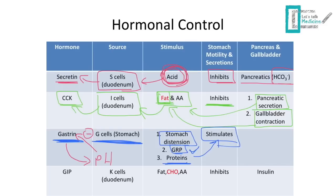Our last hormone here is GIP, found in the K cells of the duodenum. It's stimulated by fat, carbohydrates, and amino acids — basically food in general, but mostly carbohydrates. GIP inhibits stomach motility and secretions, and tells the pancreas to secrete insulin. In fact, all the hormones we mentioned — secretin, CCK, gastrin, and GIP — all stimulate insulin, but GIP is the most important. That's why some exams ask: what's better to raise insulin, oral sugar or IV? The answer is oral, because oral sugar stimulates GIP, which stimulates insulin.